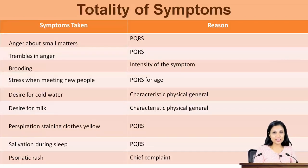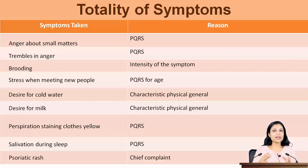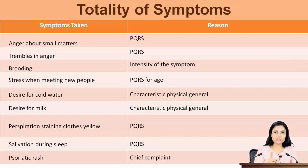Now we will look at the totality that we have taken. The totality of symptoms is a harmonious collaboration of all the characteristics - mental, physical, observational or subjective - that come together to form a comprehensive picture of the patient and hence the remedy. The first symptom is anger on small matters. For a person who is 29 years of age who has attained a level of maturity, this denotes a degree of immaturity and sensitivity, making it a PQRS - peculiar, queer, rare and strange symptom.